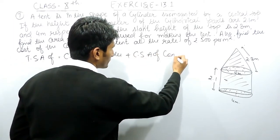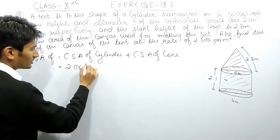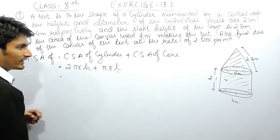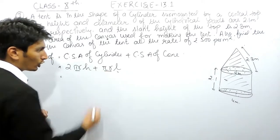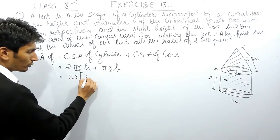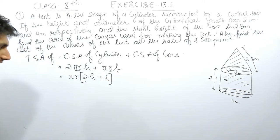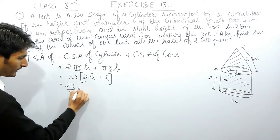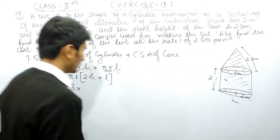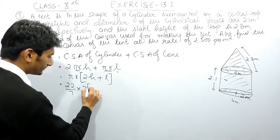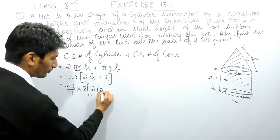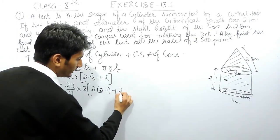The curved surface area of the cylinder is 2πrh, and the curved surface area of the cone is πrl, where l is the slant height. Taking πr as common, the total surface area becomes πr(2h + l). The value of π is 22/7, and since the diameter is 4 meters, the radius r = 2 meters. Substituting: (22/7) × 2 × (2 × 2.1 + 2.8).